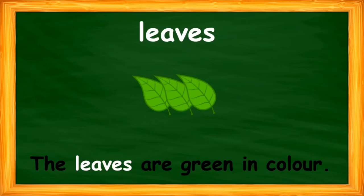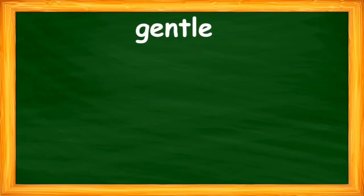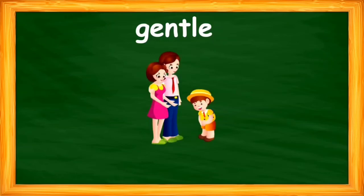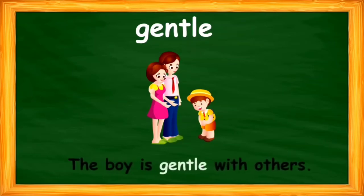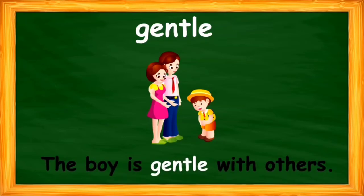The next word is 'gentle'. Look at the word and read it. What do you feel? How is the boy? I have used the word 'gentle' in a sentence like: the boy is gentle with others. Gentle means kind and being tender. You can easily look at the boy and understand he is kind and tender as well.